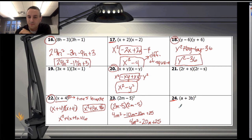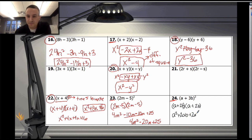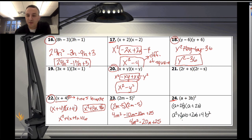For problem 24, we have two variables: (a plus 2b) squared. Distributing: a times a is a squared; a times 2b is 2ab; 2b times a is another 2ab; and 2b times 2b is 4b squared. Combining both like terms: a squared plus 4ab plus 4b squared. That's the final answer.